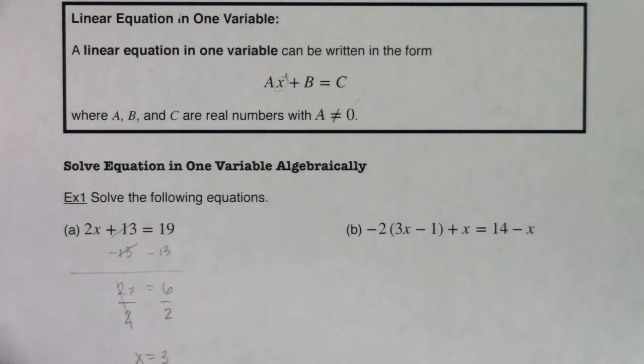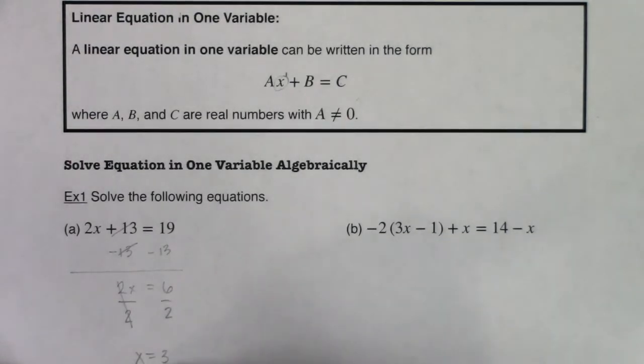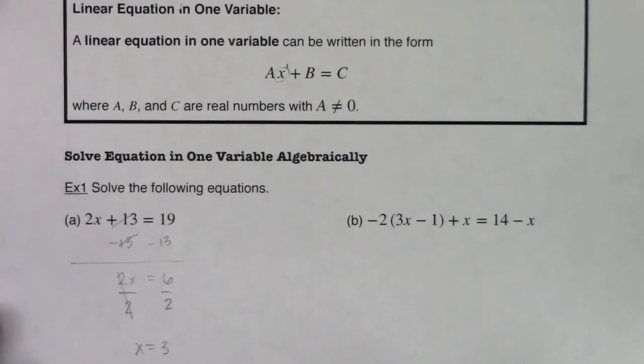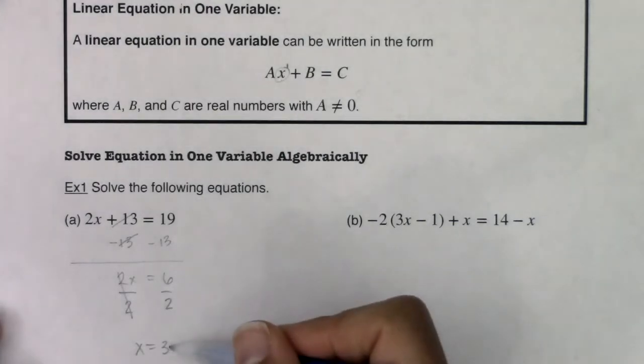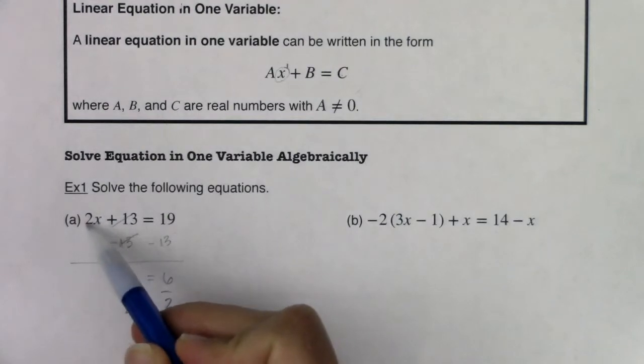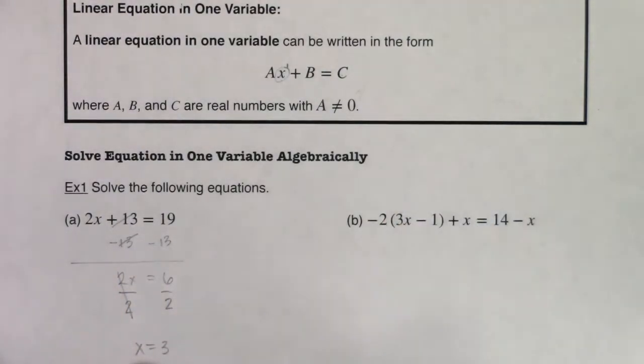If I have x equal to 3, you can always plug back in and check it. If x equals 3, I can plug this number back in: 2 times 3 is 6, 6 + 13 is 19. That checks out.